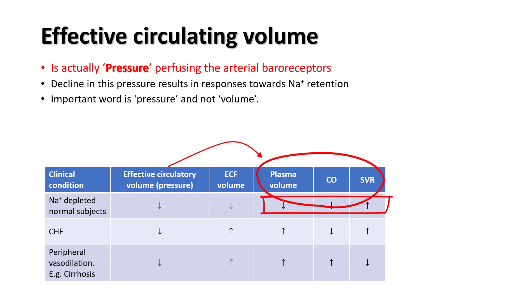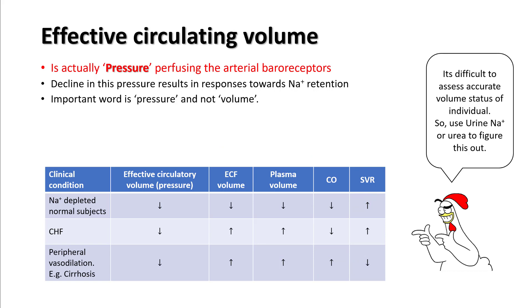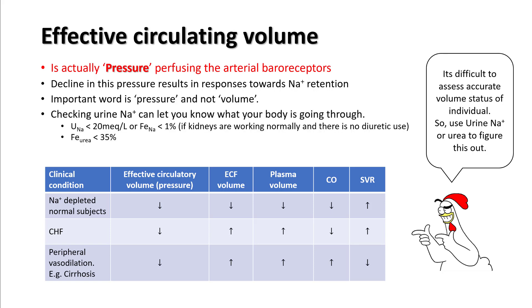We have three examples. In a sodium-depleted subject, plasma volume and cardiac output are low, SVR is high, and the low volume and cardiac output stimulate your baroreceptors. In heart failure, plasma volume and SVR are up, but cardiac output is down — and that's what the baroreceptors sense. In cirrhotic patients, plasma volume and cardiac output are pretty good, but because of very low systemic vascular resistance the baroreceptors are sensing lower pressure and are stimulated. It's very difficult to accurately assess volume status, so it's better to use labs like urine sodium and urine urea. A urine sodium less than 20 or FENa less than 1% suggests the effective circulatory volume is lower. If the patient is on diuretics, you can use FE urea to figure that out.